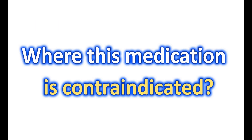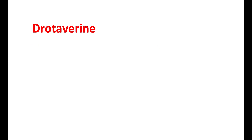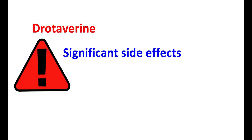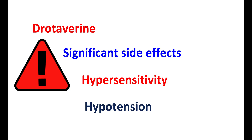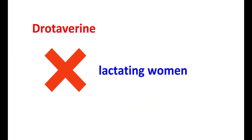Now let us see where this medication is contraindicated. Drotavarine should be avoided in situations where it produces significant side effects or increases complications. Particularly, in people developing any hypersensitivity towards drotavarine, this medication should not be used. The second contraindication is in people with significant hypotension. Since drotavarine can reduce the blood pressure, in people with pre-existing hypotension, this medication is contraindicated. Drotavarine can be secreted into breast milk, and therefore in lactating women, this medication is contraindicated as the full safety in infants has not been established.